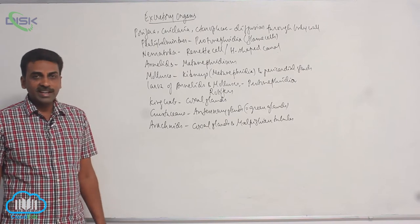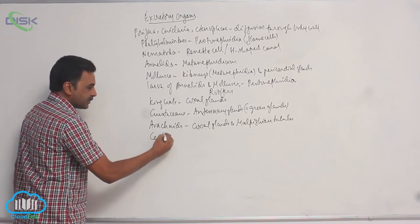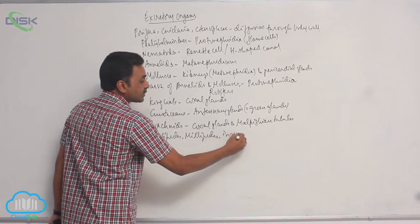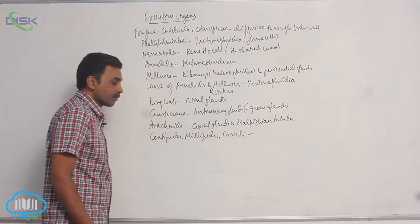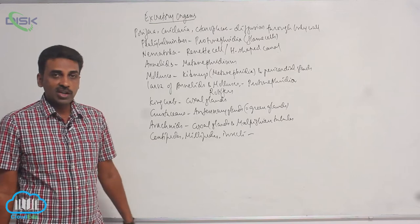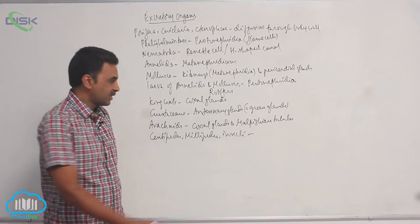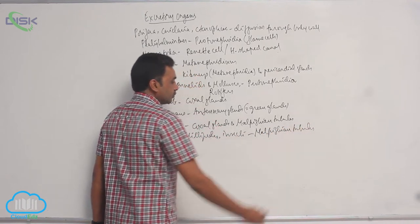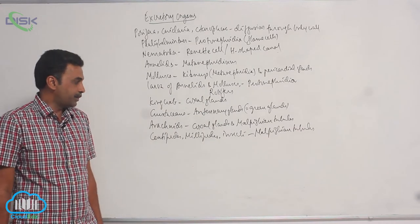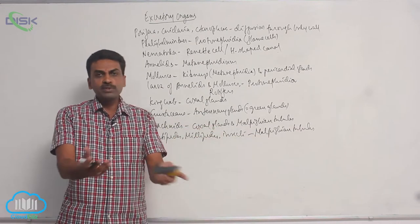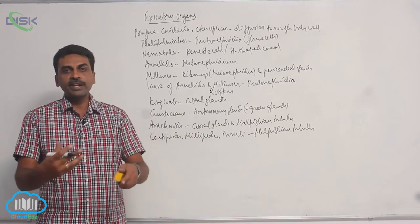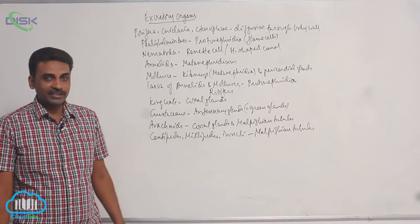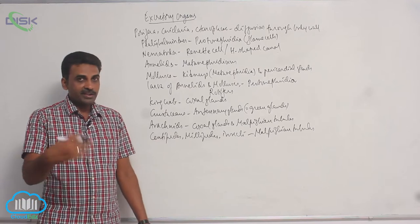When you come to the terrestrial forms — centipedes, millipedes, and insects — all the advanced terrestrial forms have Malpighian tubules as excretory organs. Malpighian tubules are always attached at the junction between mid-gut and hindgut. They dump the waste into the hindgut, and this is a method of conservation of water.